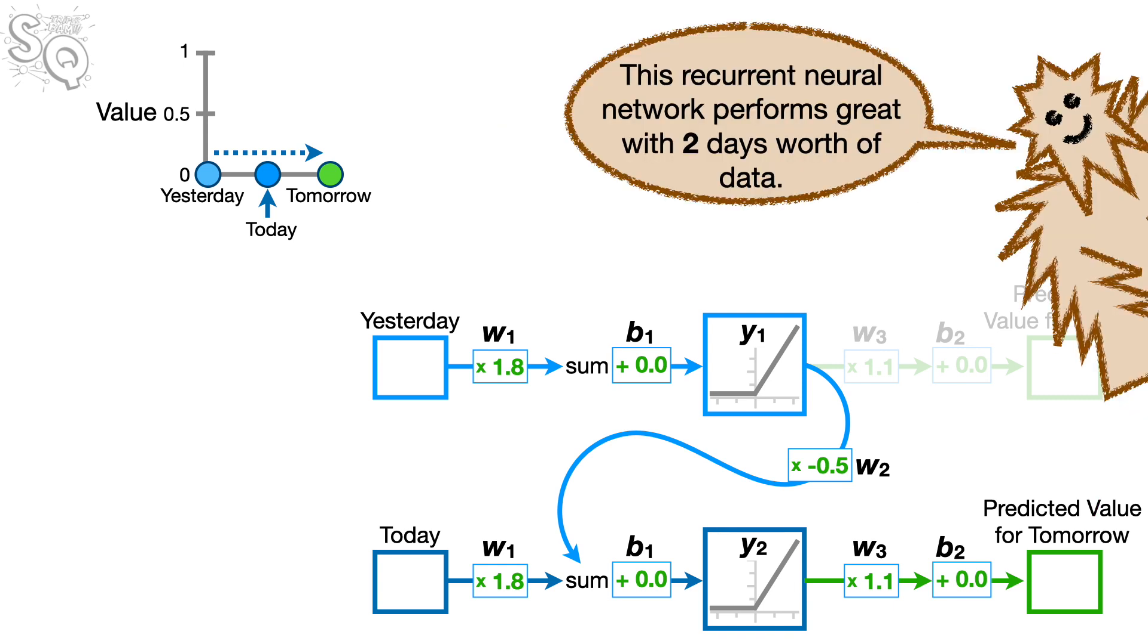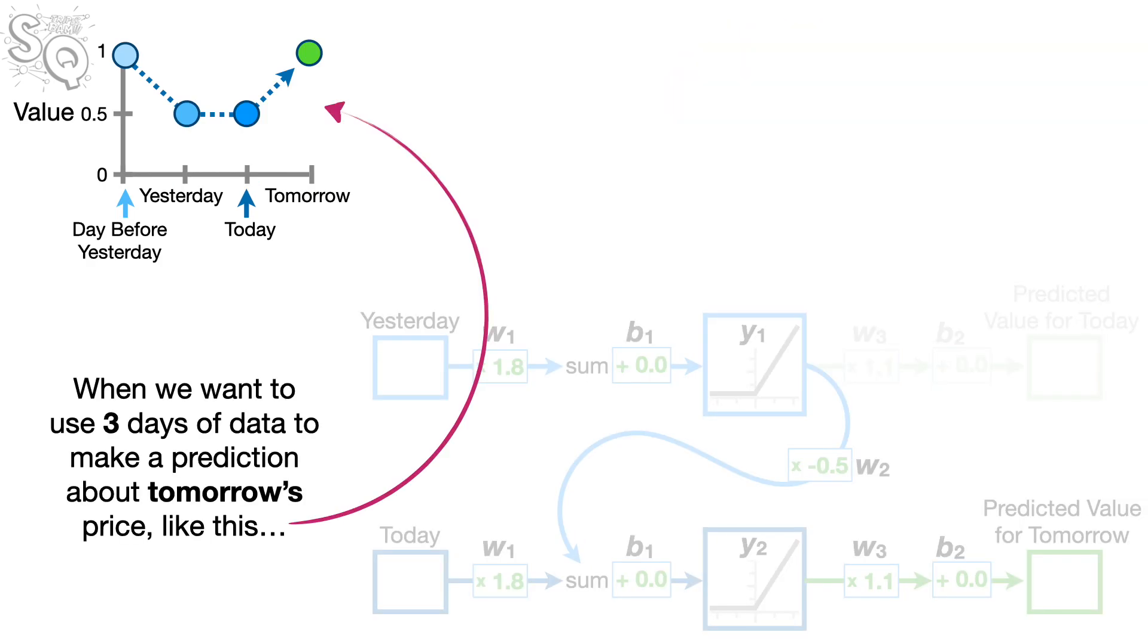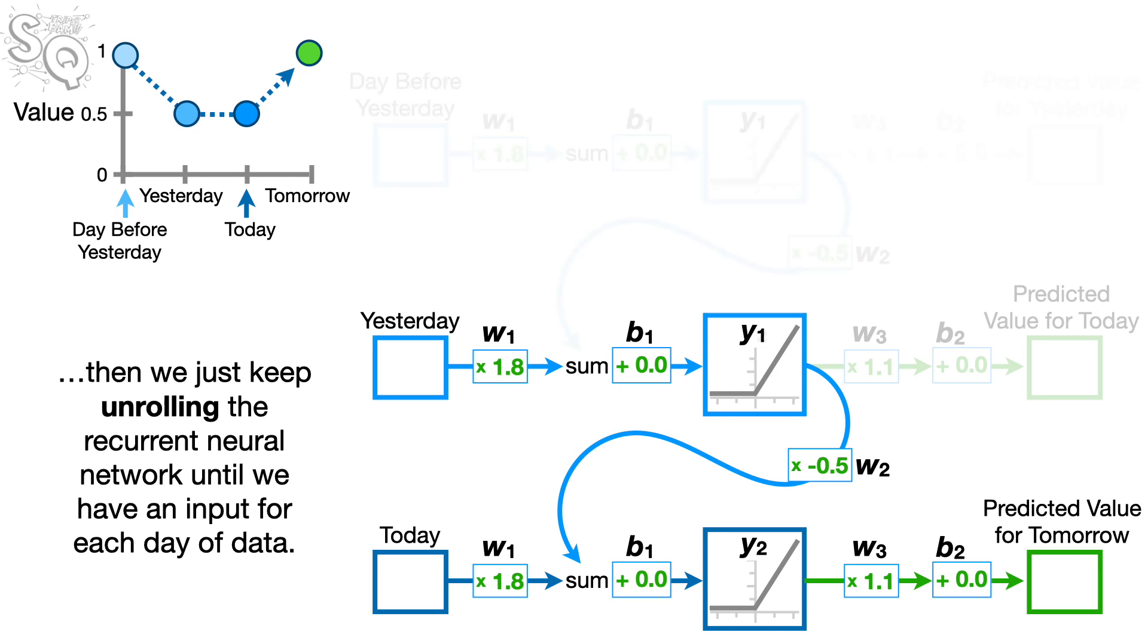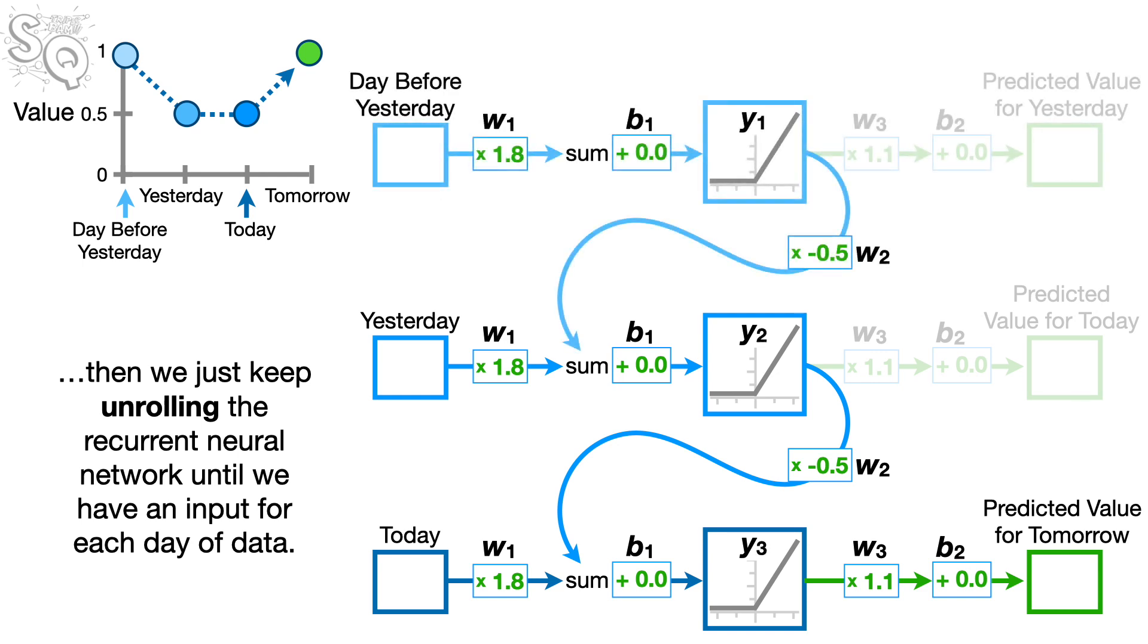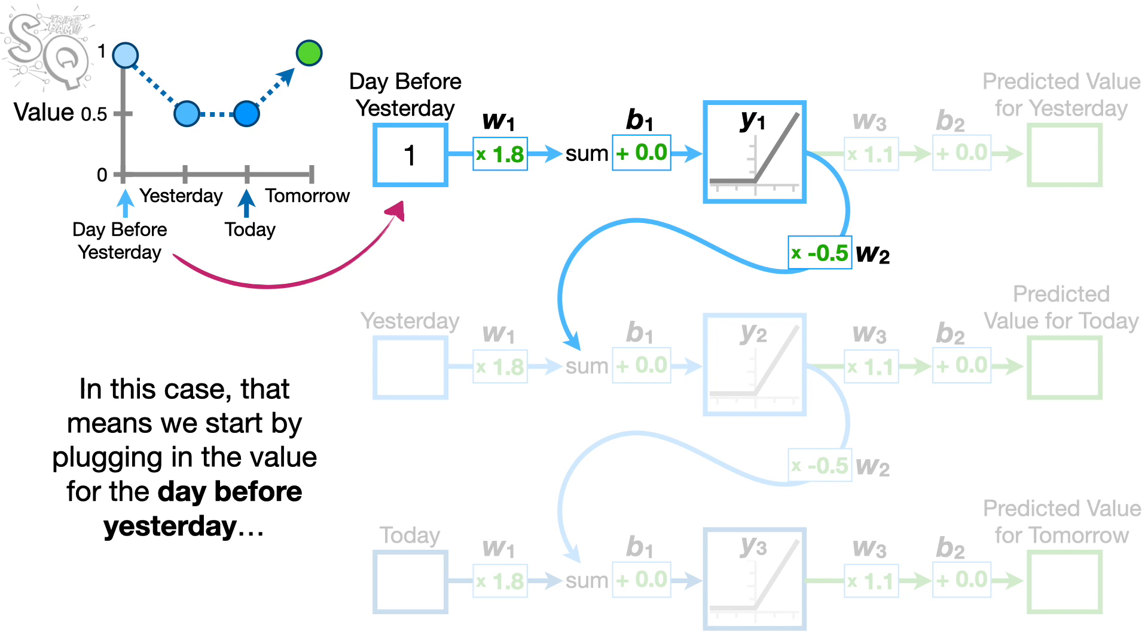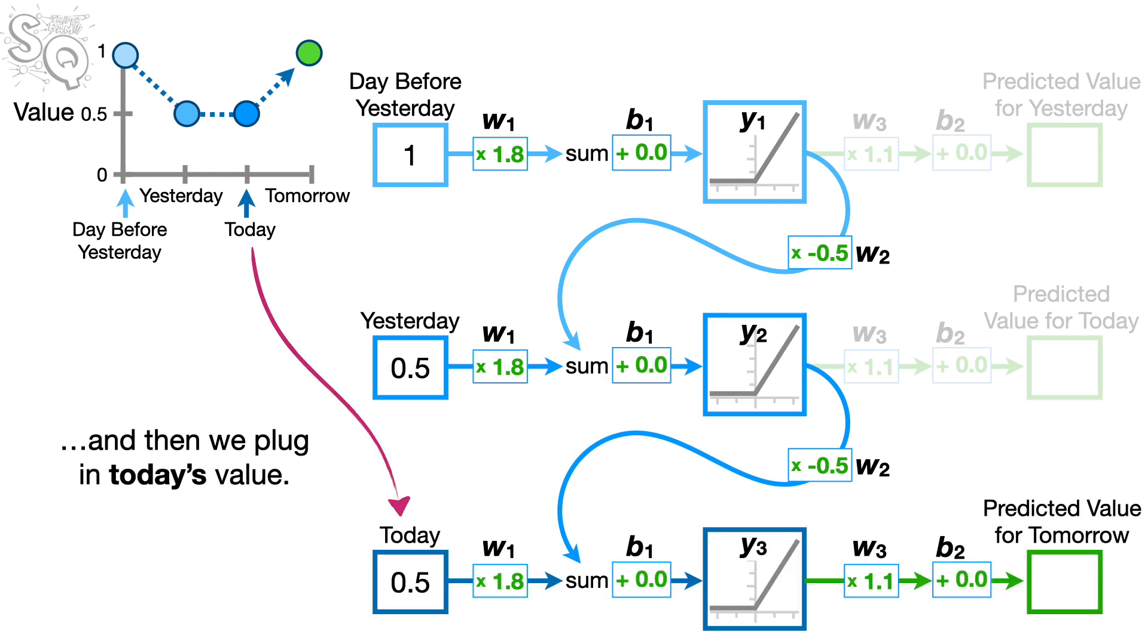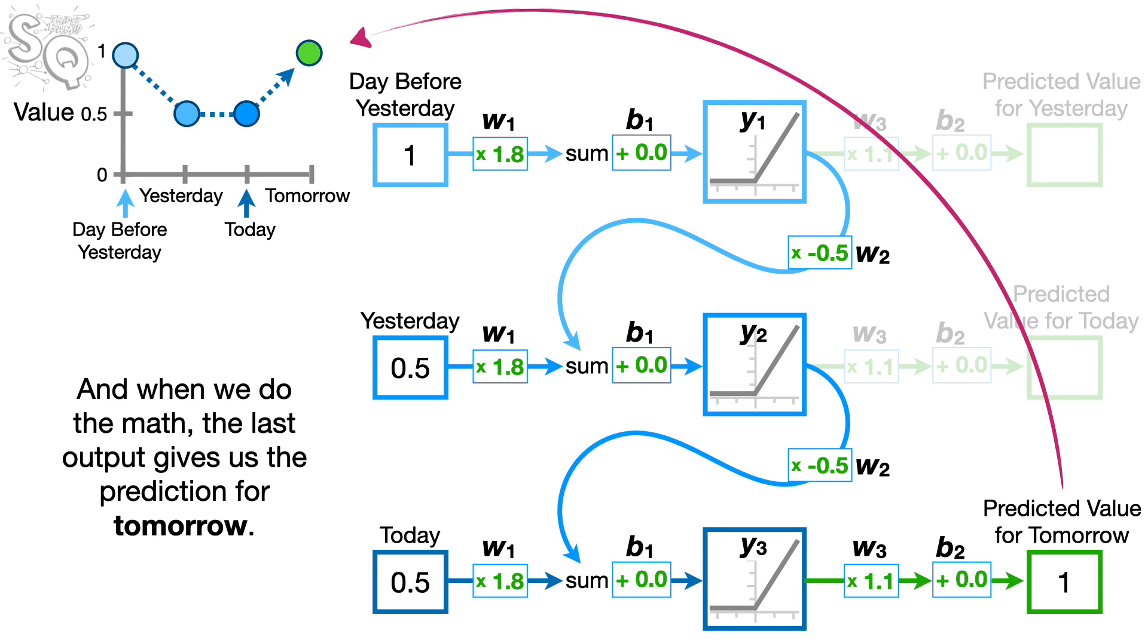This recurrent neural network performs great with two days worth of data. But what if we have three days of data? When we want to use three days of data to make a prediction about tomorrow's price like this, then we just keep unrolling the recurrent neural network until we have an input for each day of data. Then we plug the values into the inputs, always from the oldest to the newest. In this case, that means we start by plugging in the value for the day before yesterday. Then we plug in yesterday's value. And then we plug in today's value. And when we do the math, the last output gives us the prediction for tomorrow. So, bam!